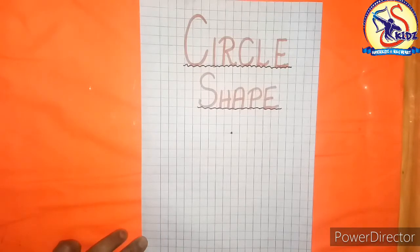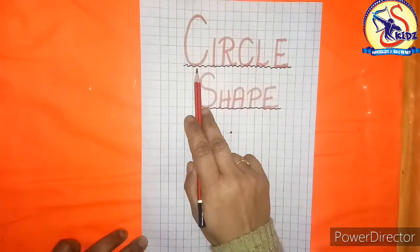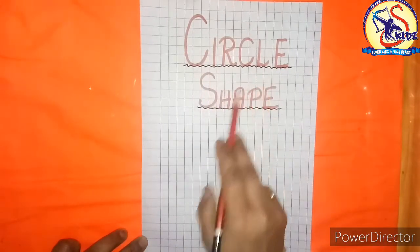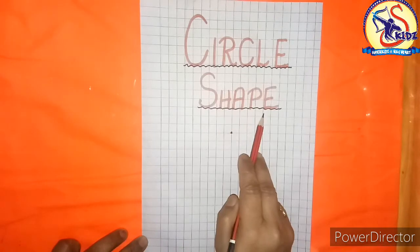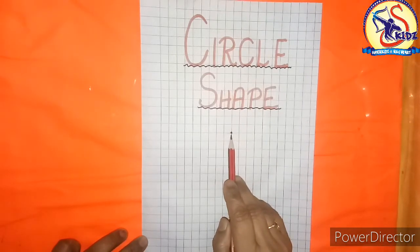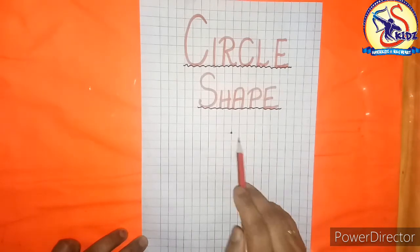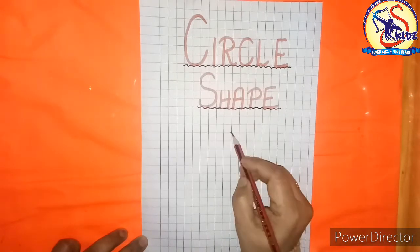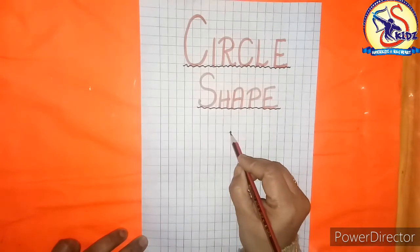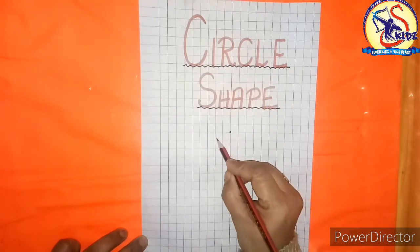Now we will learn how to draw a circle shape. Here is a dot, so we will start making the circle from the dot. Now start making — make a curve.